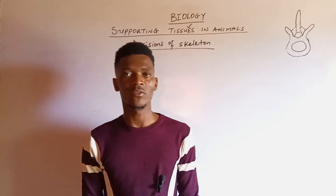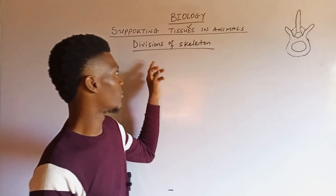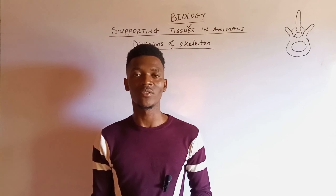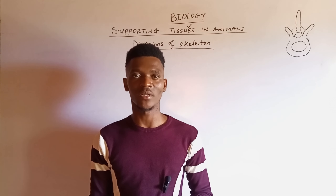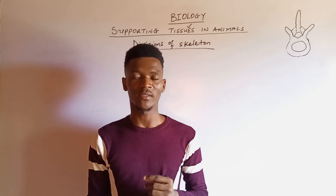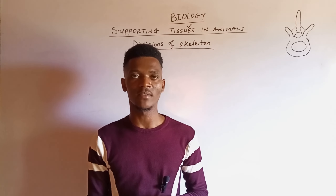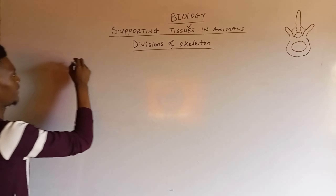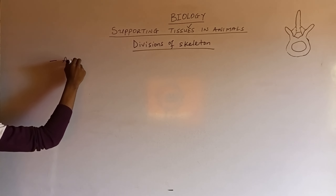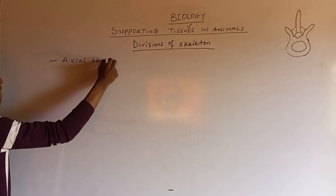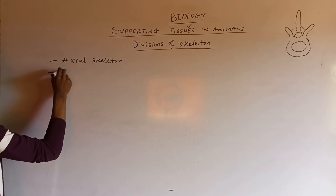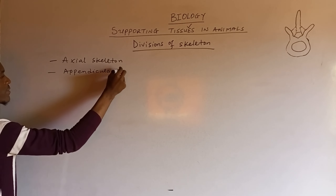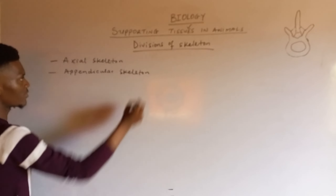Welcome back. Now we are going to be looking at divisions of skeleton. You can recall in our previous video I said that divisions of skeleton is different from the types of skeleton. There are three types of skeleton: endo, exo, and hydrostatic. The divisions of skeleton are two: the axial skeleton and the appendicular skeleton.